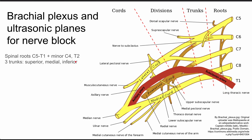The spinal roots turn into the three trunks of the brachial plexus: the superior trunk, the medial trunk, and the inferior trunk.